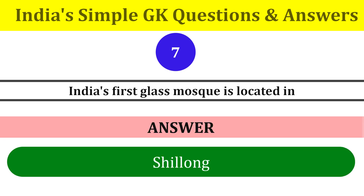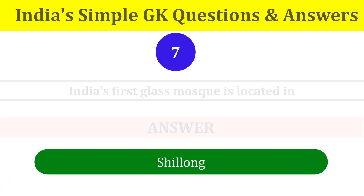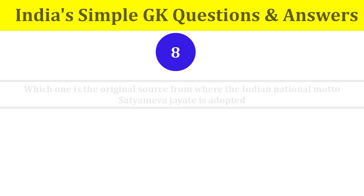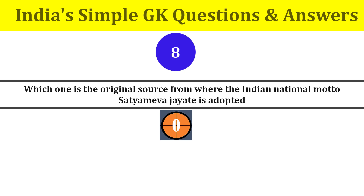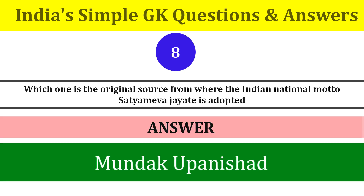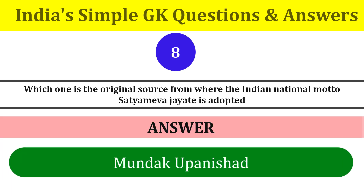Question number seven: India's first glass mosque is located at? India's first glass mosque is located at Shillong. Question number eight: which is the original source from where the Indian national motto 'Satyameva Jayate' is adopted? The original source is the Mundaka Upanishad.